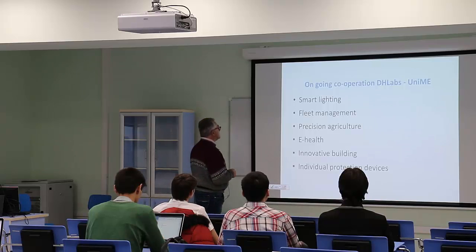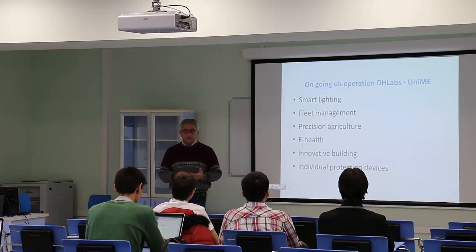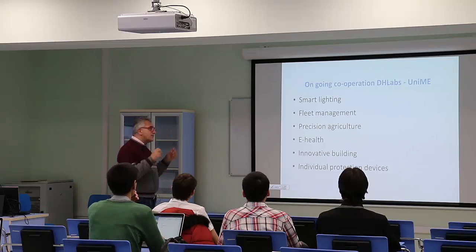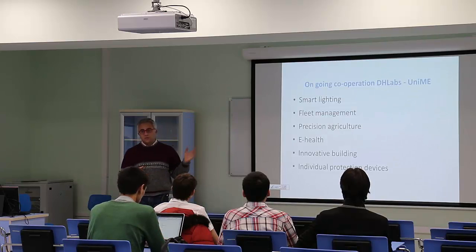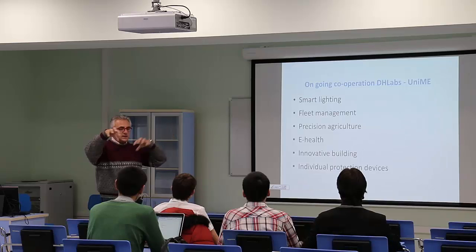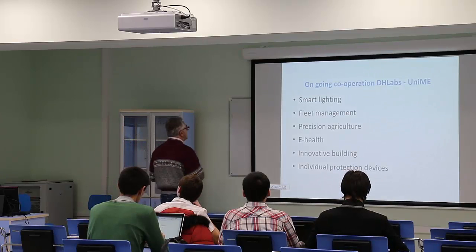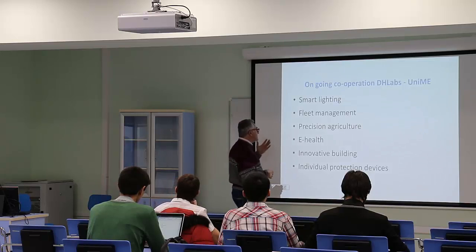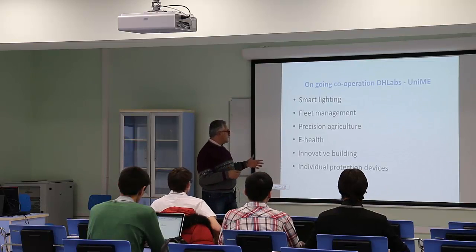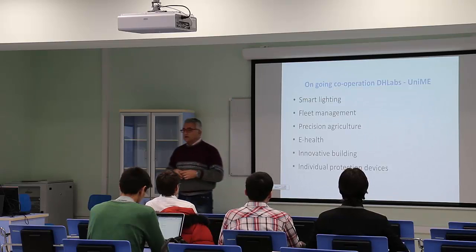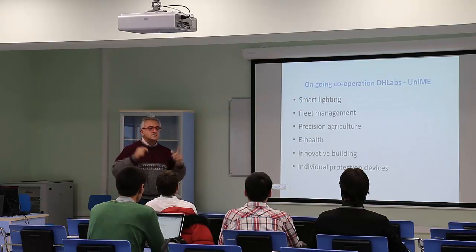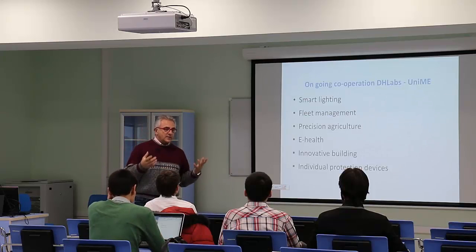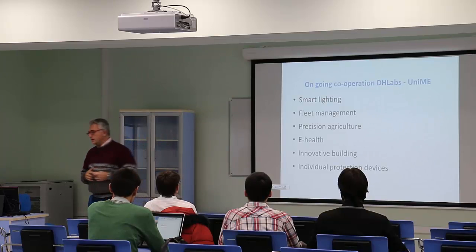Possible applications we are working on now are related to smart lighting — smart control of lighting in a public environment. In the main square of Messina, the different lights are controlled with this technology. Other areas include fleet management, precision agriculture, e-health, innovative building, and individual protection devices. These are quite different from each other, but all belong to a smart control environment — smart city services.